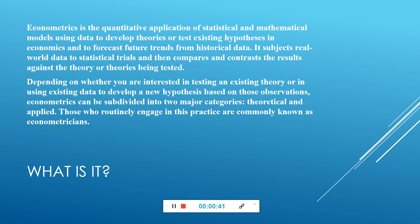Econometrics is the quantitative application of statistical and mathematical models using data to develop theories or test existing hypotheses in economics and to forecast future trends from historical data. It subjects real-world data to statistical trials and then compares and contrasts the results against the theory or theories being tested. Depending on whether you are interested in testing an existing theory or in using existing data to develop a new hypothesis, econometrics can be subdivided into two major categories: theoretical and applied. Those who routinely engage in the practice are called econometricians.